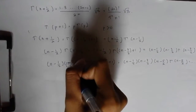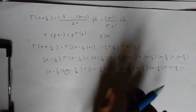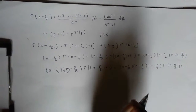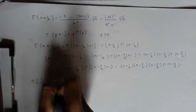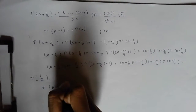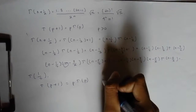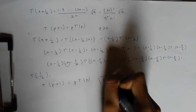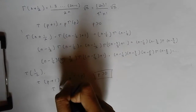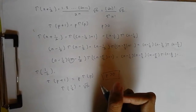Since n is a fixed integer, this process always comes to an end. Eventually we cut down to Γ(1/2), at which point we cannot go any further, because Γ(p+1) = p·Γ(p) only holds for p greater than 0. However, we know from a previous result that Γ(1/2) is equal to square root of π.